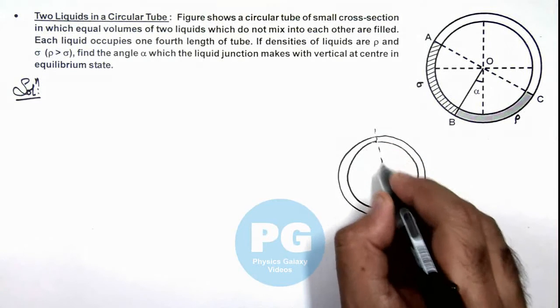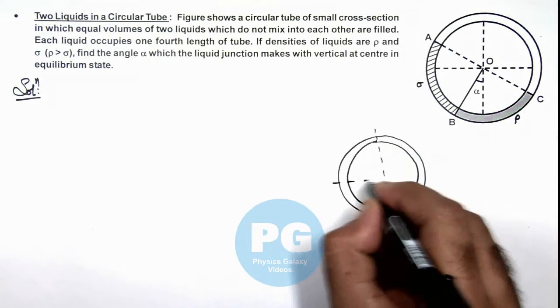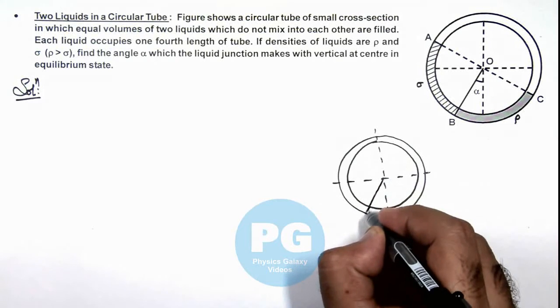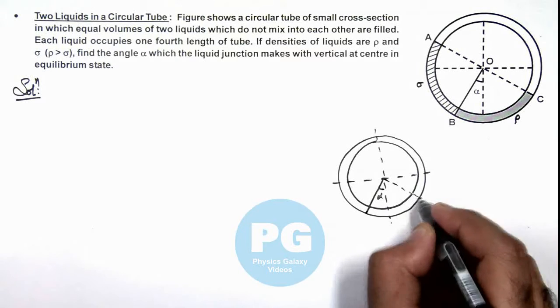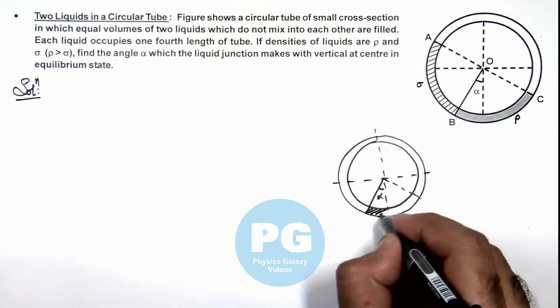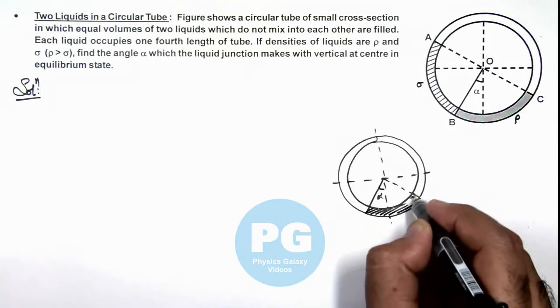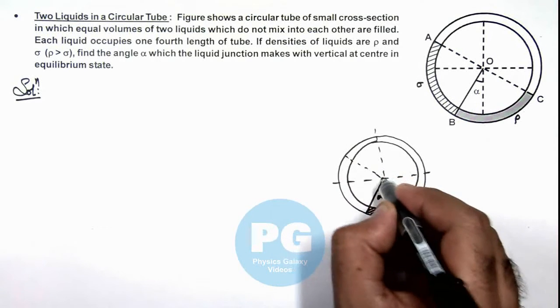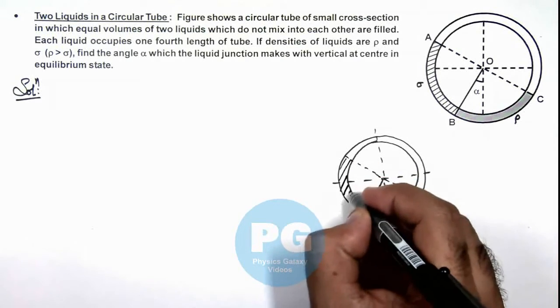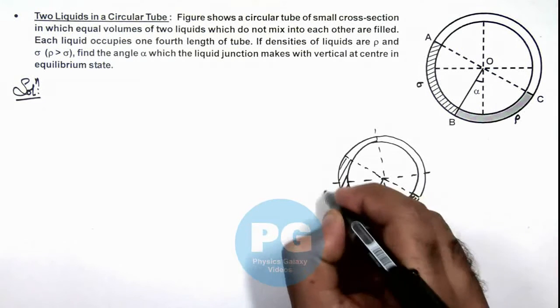And in this case of tube, this is a situation when the junction is making an angle α. This is one liquid filled here which is of density ρ, and here is another liquid which is of density σ.